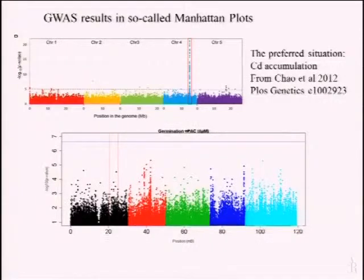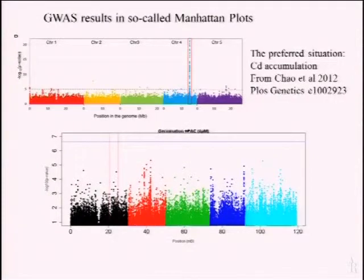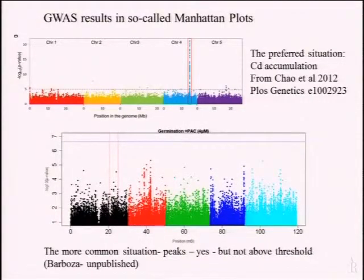This is an experiment from our own group, from my PhD student Louis Barbosa. You get peaks, yes, sometimes also these nice streaks — but be careful. This is the threshold, and nothing is above the threshold. It probably means something that you have a peak here and there, but there are reasons why it's not getting significant, and this is certainly one of the complications in genome-wide association mapping. In this region that's highlighted, there is a really significant QTL — we confirmed that by other means — so there is something in this noise, but it's not so straightforward as the previous example. This is a very common situation in many experiments.